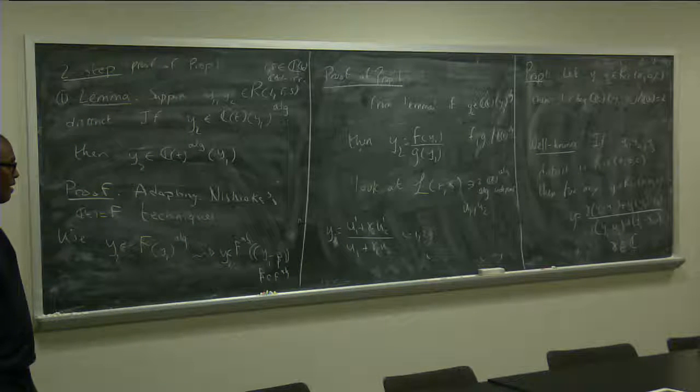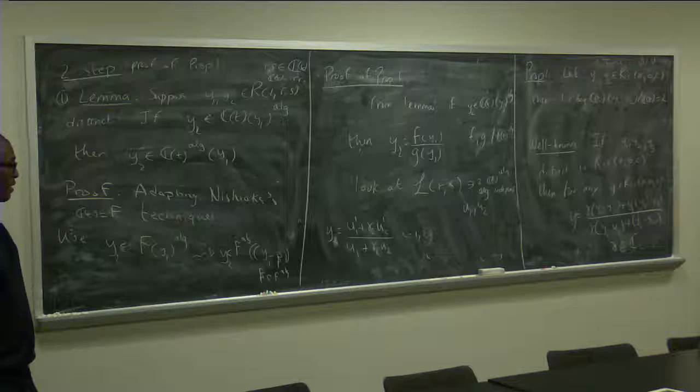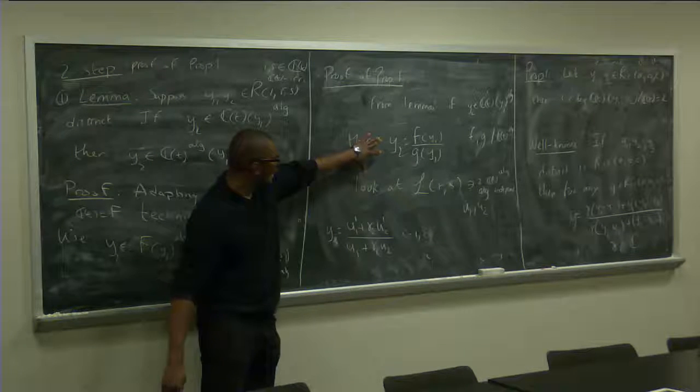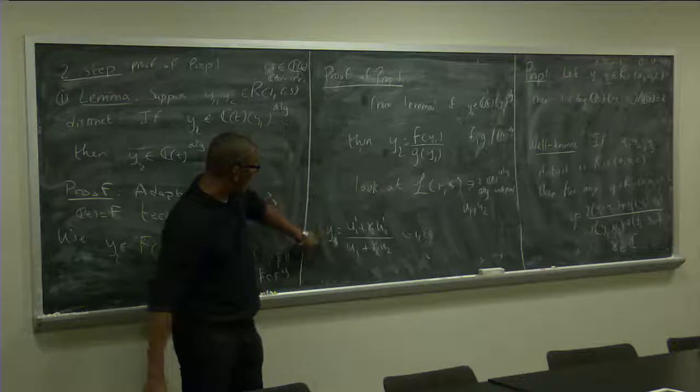So each one can be written as rational functions, u1 prime, u2 prime. And now, sort of, look at the relationship that y1, y2, and y1 has to be, let me write it down. It's easier.